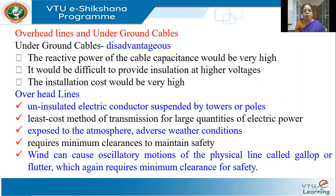In contrast, we have overhead lines, which are uninsulated electric conductors suspended by towers or poles, and they're very cheap compared to underground cables. However, these overhead lines, because they're above the ground, are exposed to adverse weather conditions. In areas prone to windstorms and ice, there is always a chance that the conductor may break.